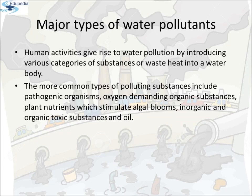Major Types of Water Pollutants: Human activities give rise to water pollution by introducing various categories of substances or waste heat into a water body. The more common types of polluting substances include pathogenic organisms, oxygen-demanding organic substances, plant nutrients which stimulate algal blooms, inorganic and organic toxic substances, and oil.